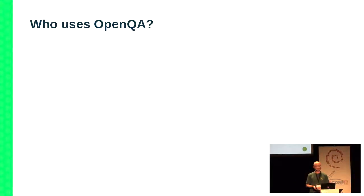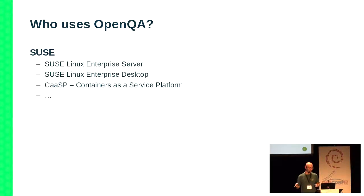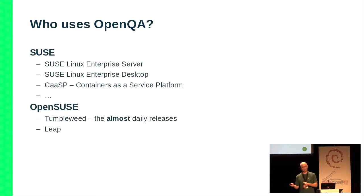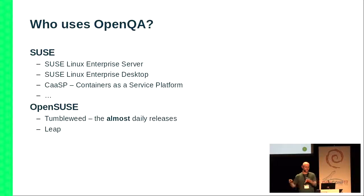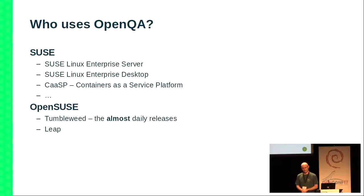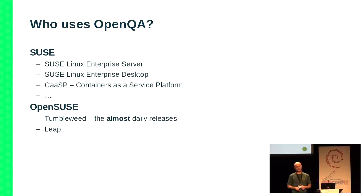So who uses OpenQA? Obviously SUSE uses it for enterprise products, desktops, the new CASP container-as-a-service platform, and so on. OpenSUSE uses it for two distributions: Leap, which is the more traditional distribution with a yearly cycle, and Tumbleweed. Tumbleweed is almost a daily distribution — I say almost because otherwise it would have a new release every day. But it doesn't, because sometimes OpenQA will stop it. A test will cause the release to be prevented so the user doesn't get a broken system.